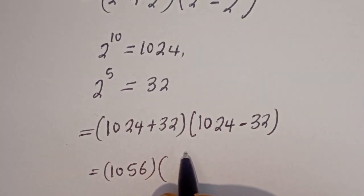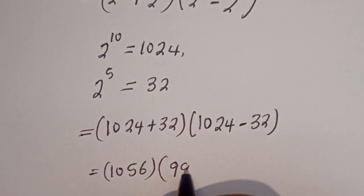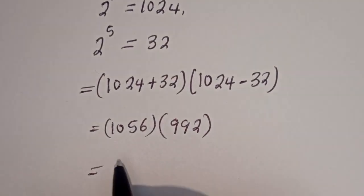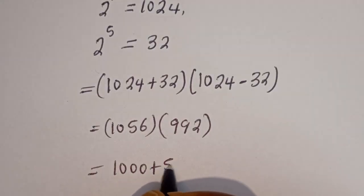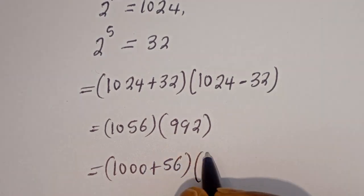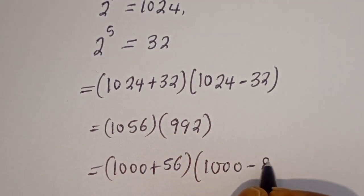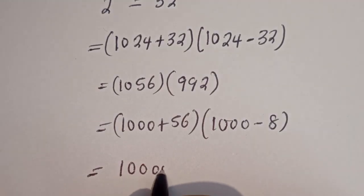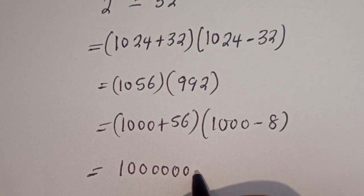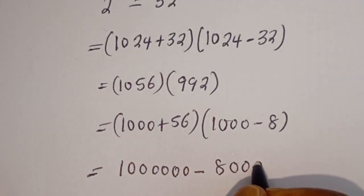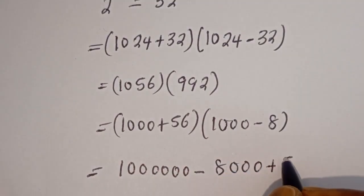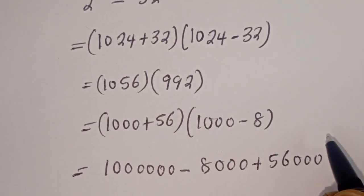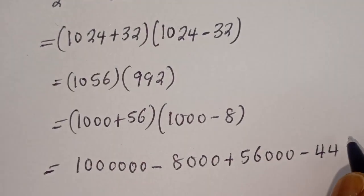This is 992. Now, 1056 can be written as 1000 plus 56, and 992 can be written as 1000 minus 8. Let's multiply this out: 1000 multiplied by 1000 is 1 million, then minus 1000 times 8, which is 8000, plus 56 times 1000, which is 56,000, then minus 56 times 8, which is 448.